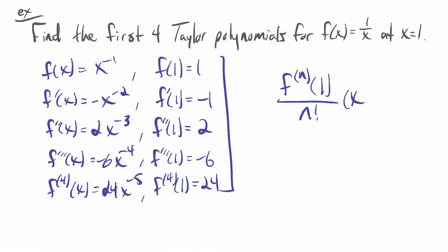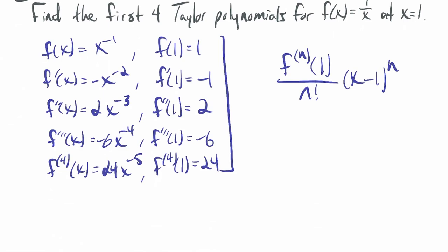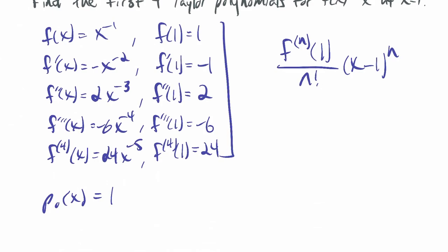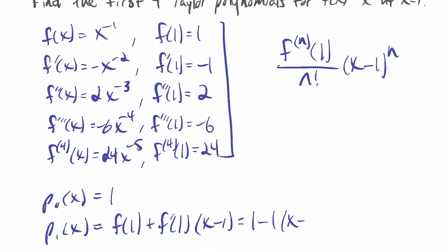These are the numerators in the formula: nth derivative evaluated at 1, over n factorial, times x minus 1 to the n. So p0 of x is just 1 — a constant function. Then p1 is the linearization: f of 1 plus f prime of 1 times x minus 1, which is 1 minus 1 times (x minus 1), or negative x plus 2.